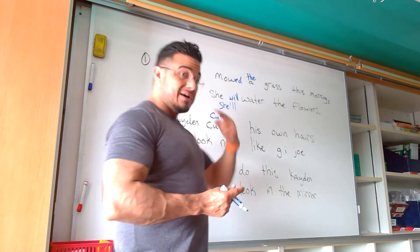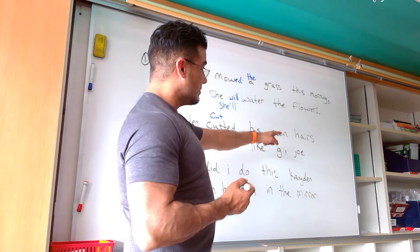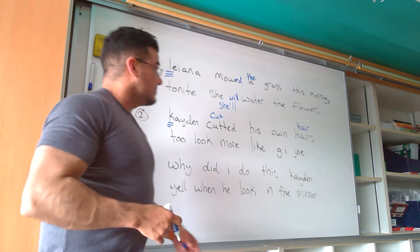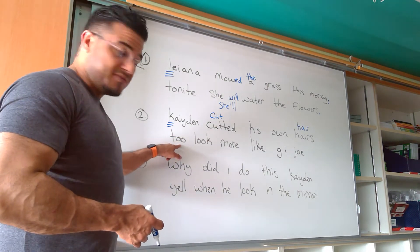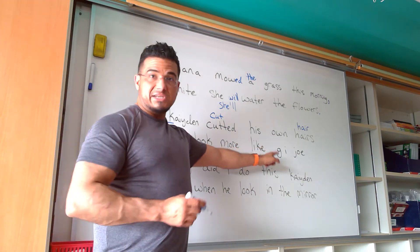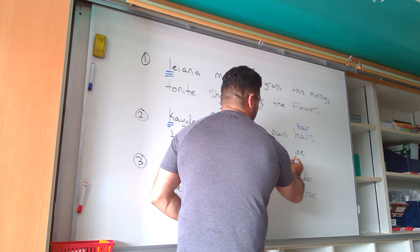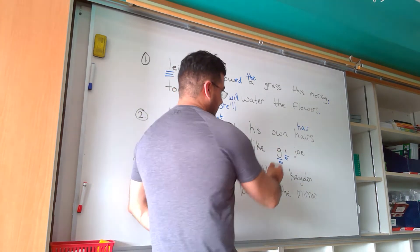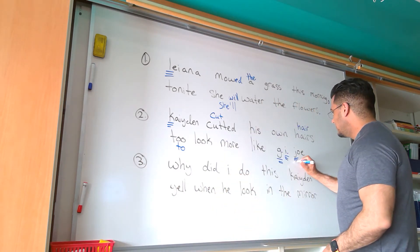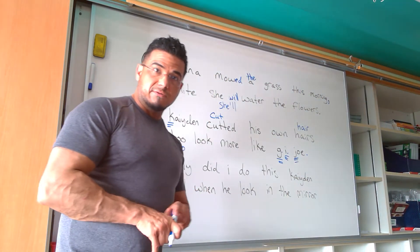Generally speaking, when you're cutting hair, you're not cutting one individual strand — you're cutting multiple. So 'hairs' would not be the appropriate word to use when referring to hair on the head. We're going to say he cut his own hair. To look more like G.I. Joe — G and I are initialisms, so we capitalize each and separate them with a dot: G.I. Joe is also capitalized as a name of a toy or cartoon. End with a period.